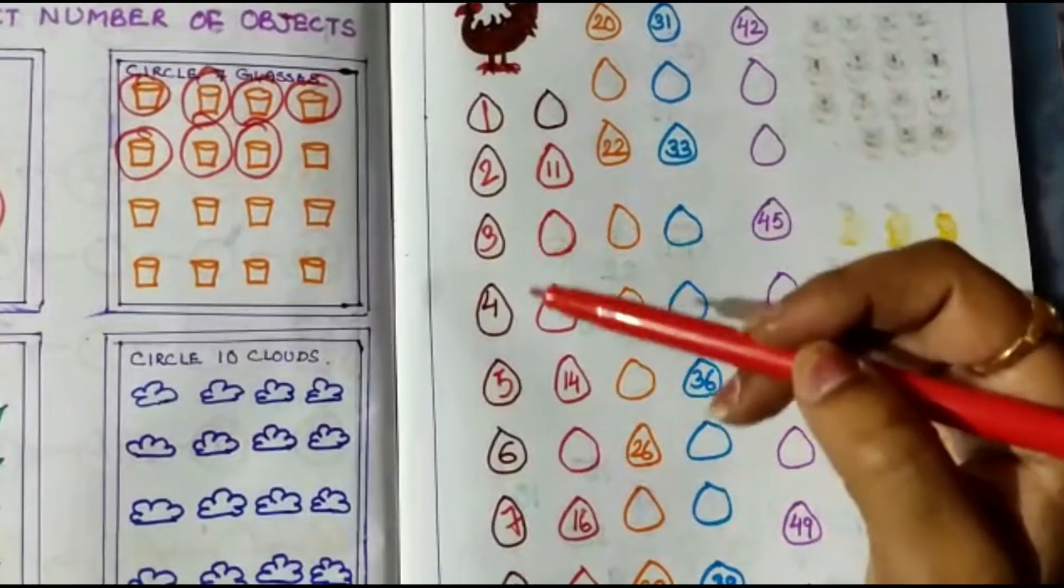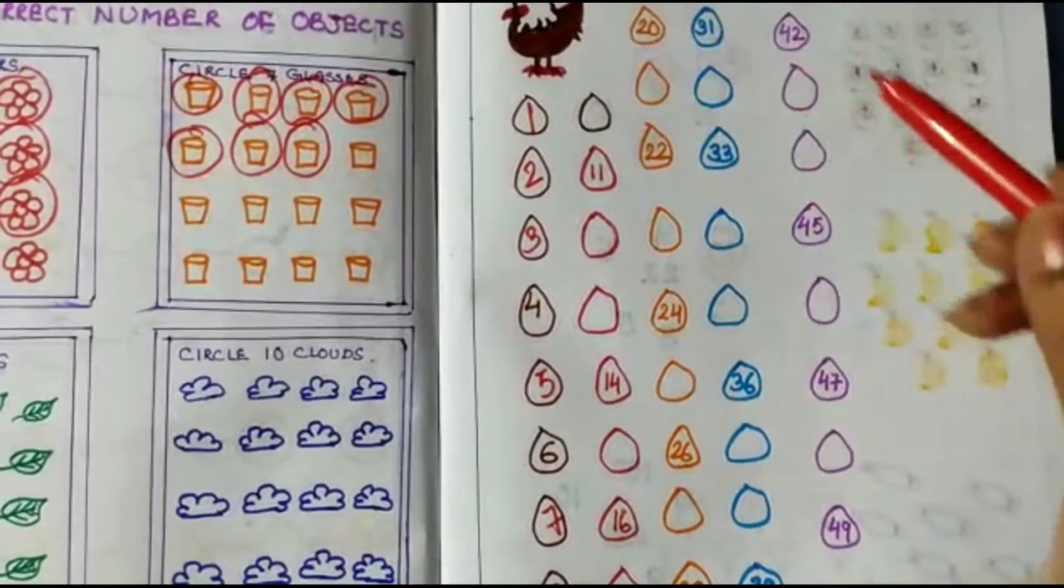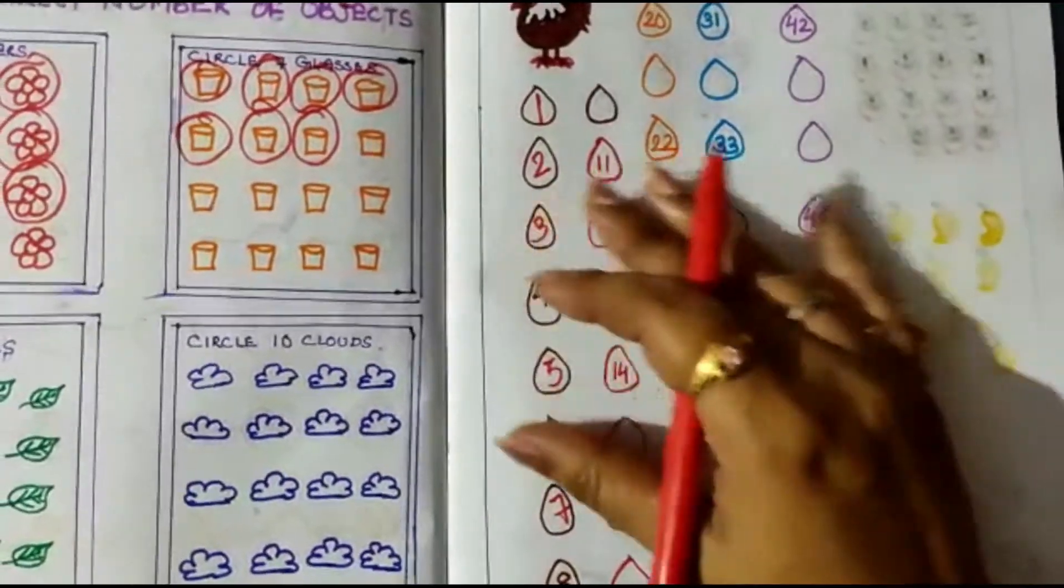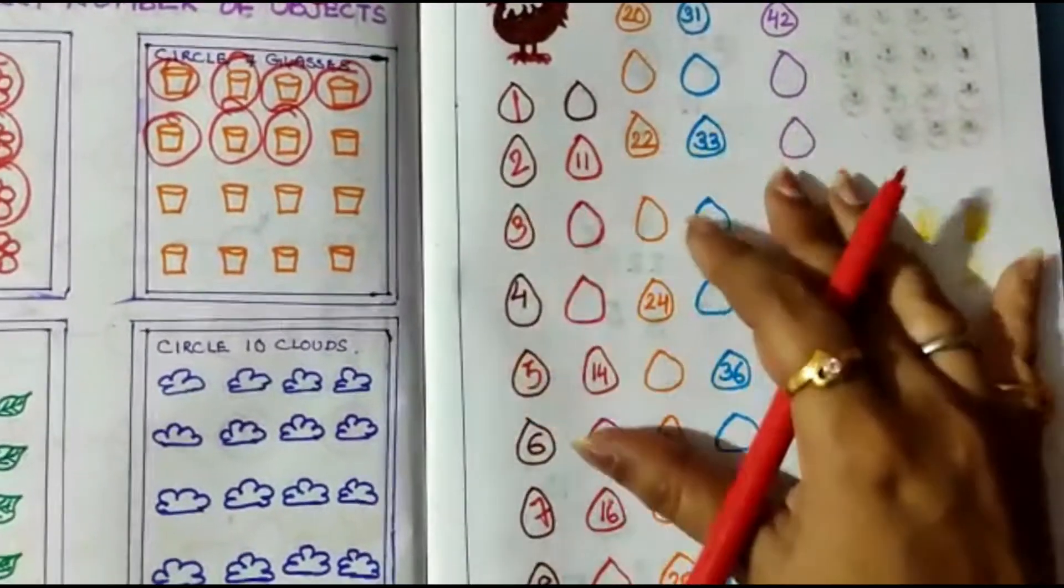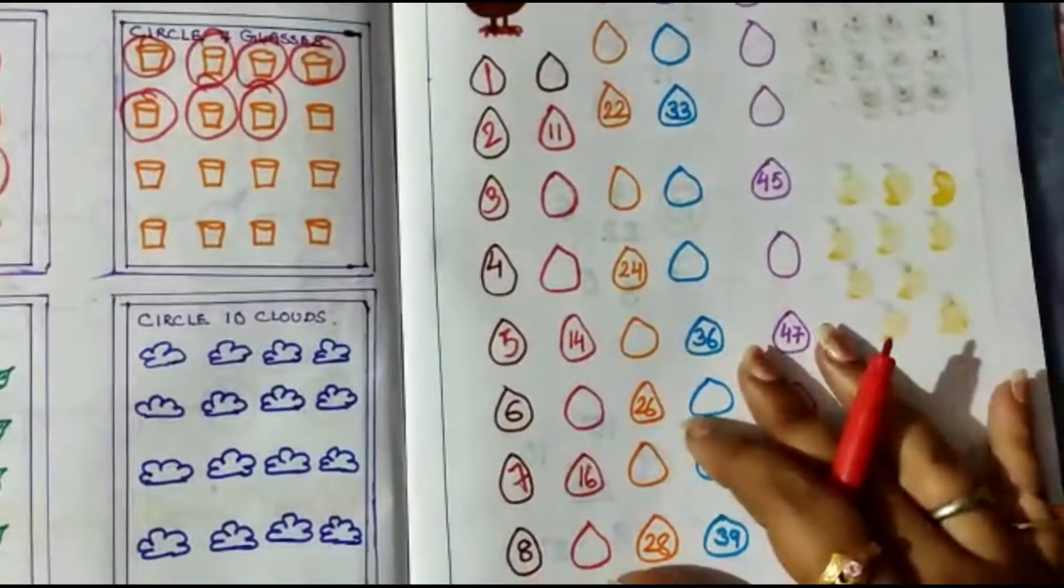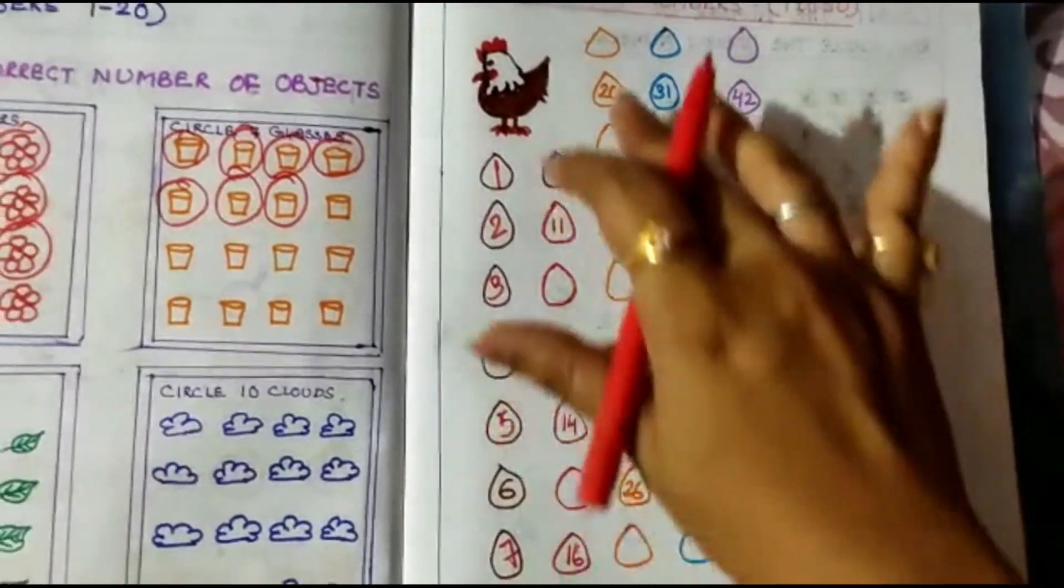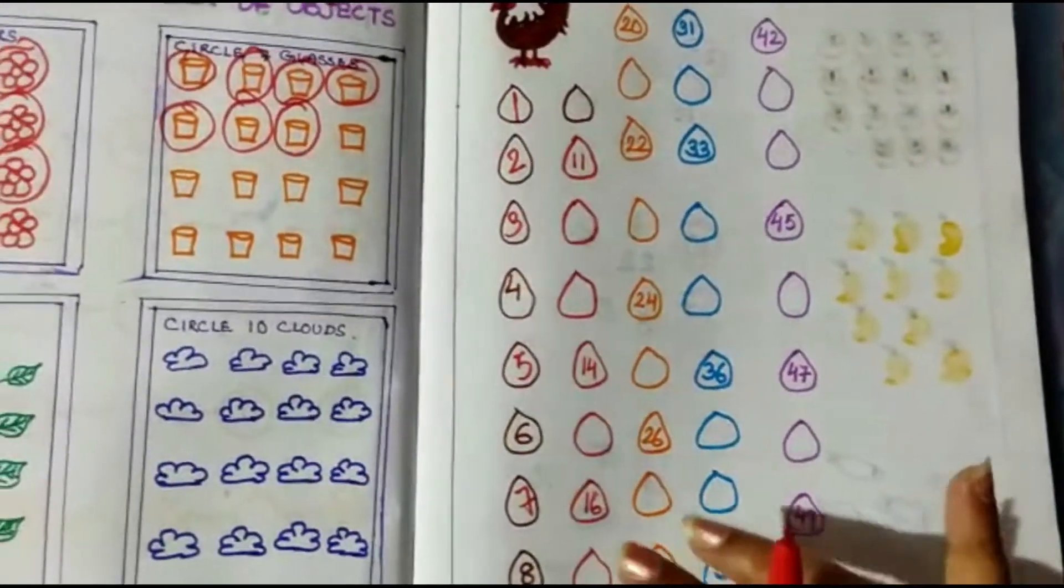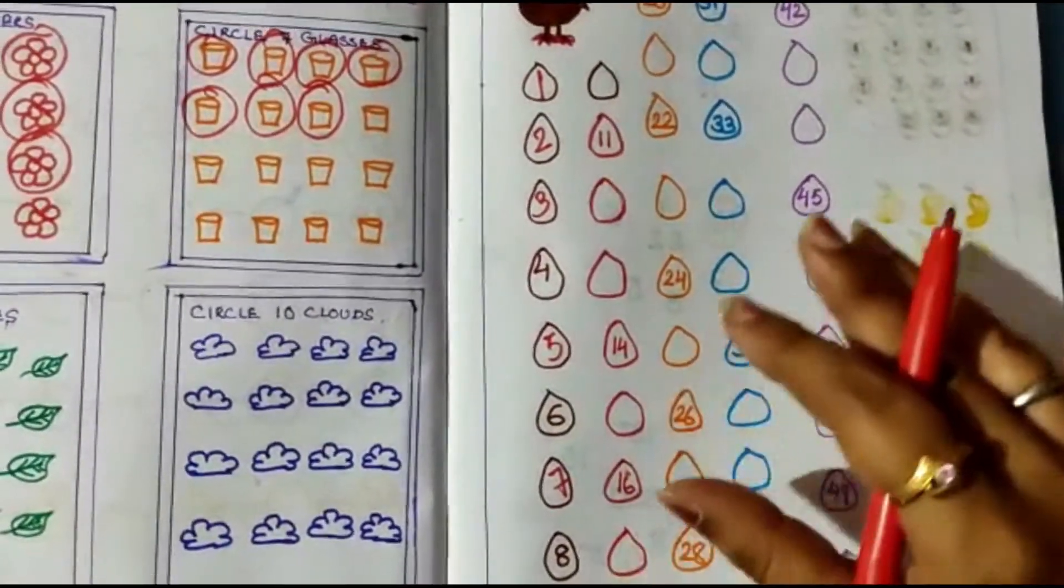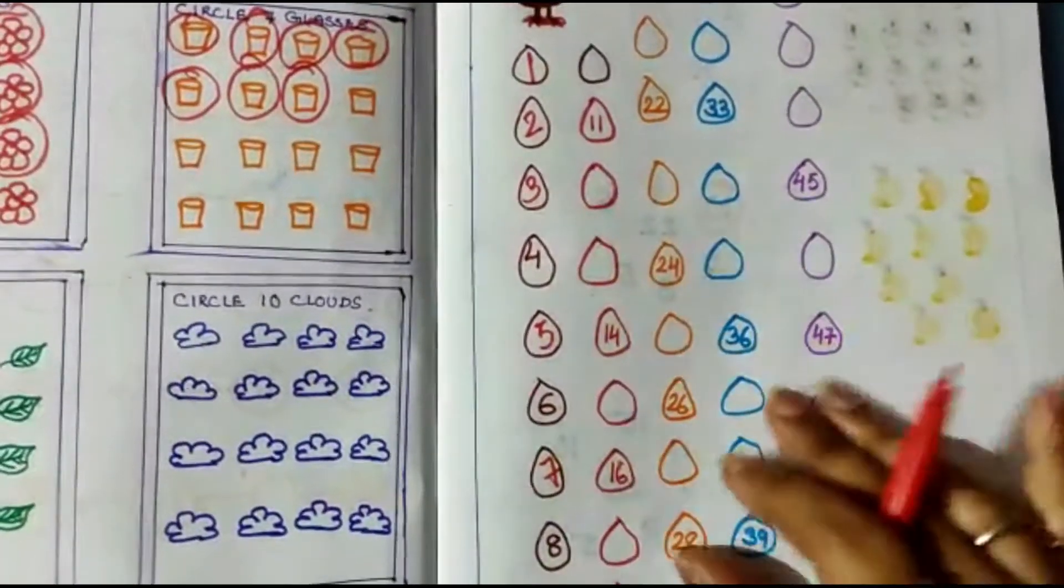I have some counting with blanks. If we teach the child this way, then it will be fun to fill up and they can use different colors. In 1 to 50 counting, if we give the child this type of worksheet, they will be interested and they will fill it up with you.